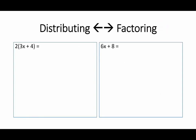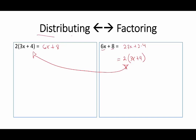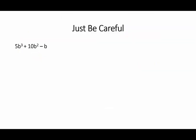So here we can distribute 2, giving 6x + 8. Whereas here, we identify that 2 is the common factor: 2×3x + 2×4. We pull out the 2, and what remains is just 3x + 4. Here we are distributing; here we are factoring. We must be careful because sometimes variables may be common factors, constants, or both.